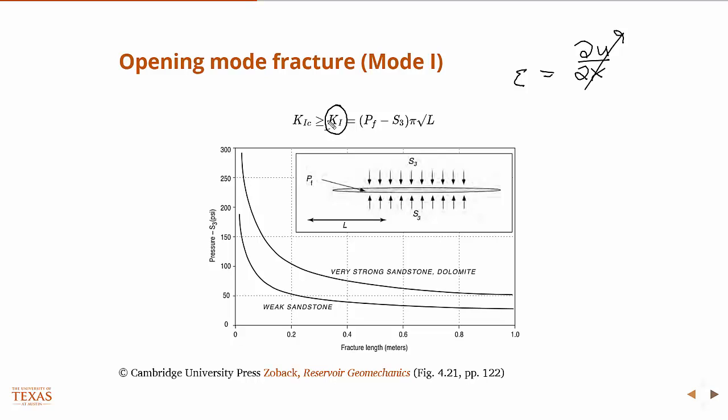And in a semi-infinite body or an infinite body subject to a constant pressure, where you have a crack, an elliptical crack subject to a constant pressure, then the equation for the stress intensity factor is this. And here we've included the effect, we've broken down. Normally this is effective stress out front. But it's the pore pressure minus the minimum principal stress. And you can see it's proportional to the square root of length.